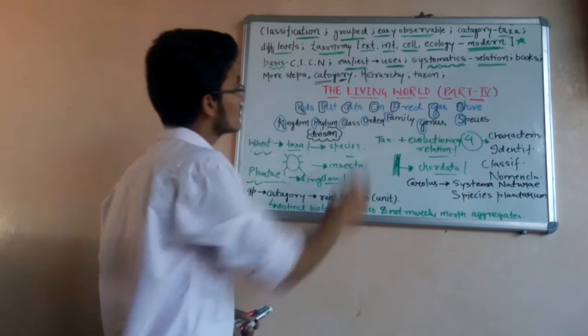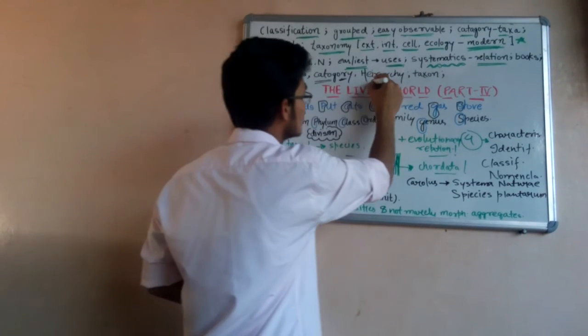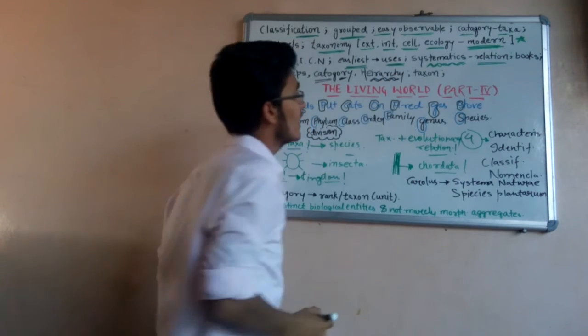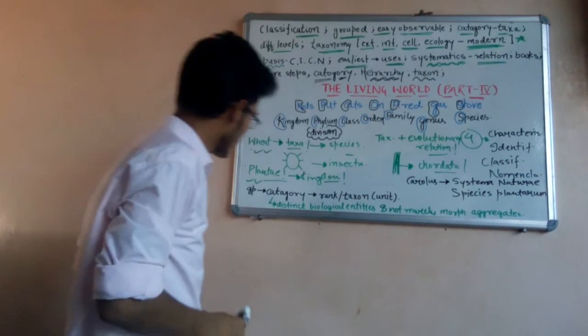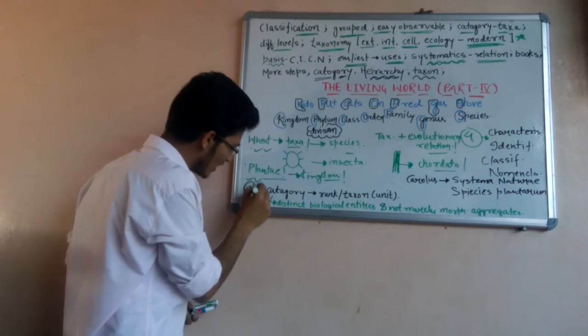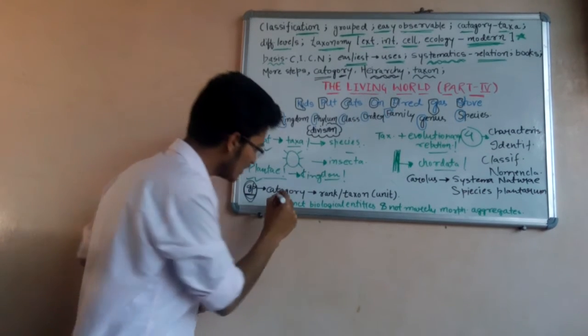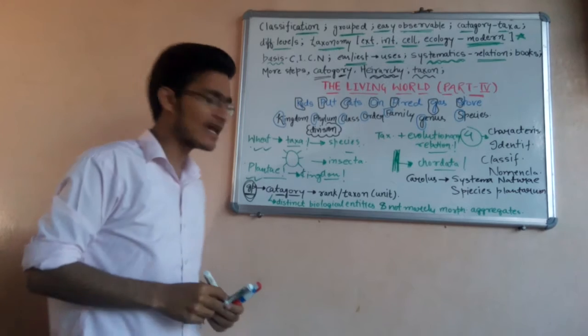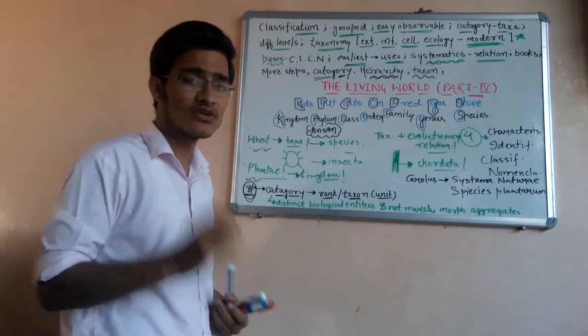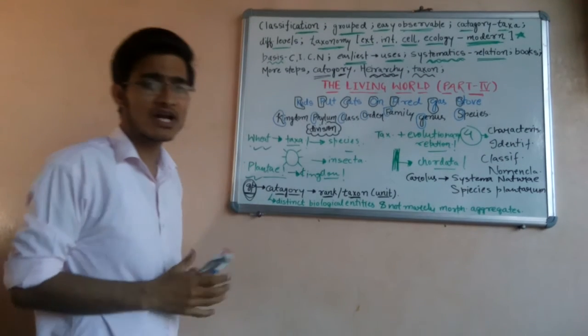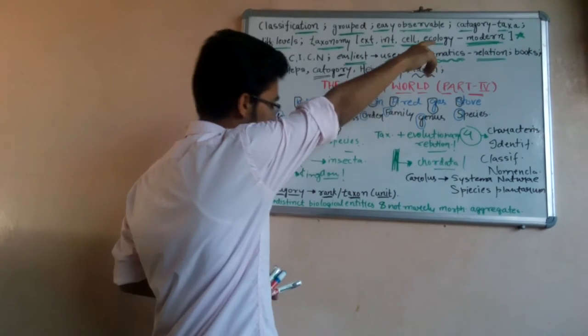The categories, that are the taxons, may be of various levels and they are placed in ascending or descending order, which is known as hierarchy. Each of the category is known as taxon, which we have already discussed earlier. In NCERT there is a very complicated line we have to focus on: the group of organisms form a convenient category, and that particular category forms a rank or a taxon, which is the unit of taxonomy. Taxon is the unit of taxonomy as the name indicates.